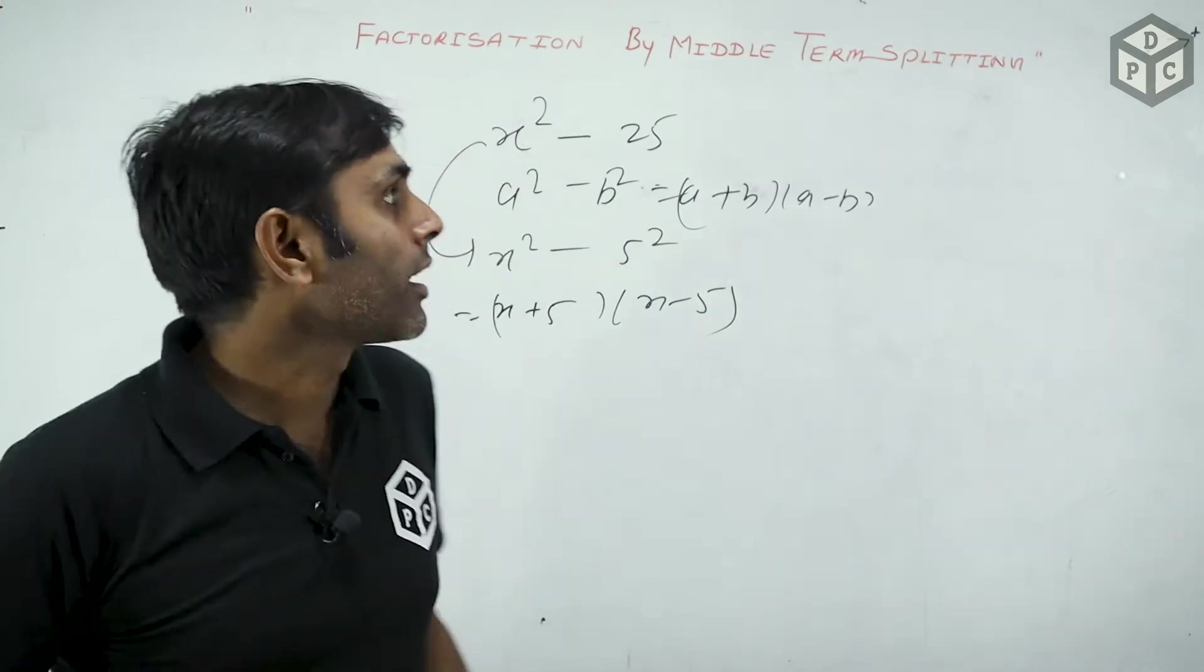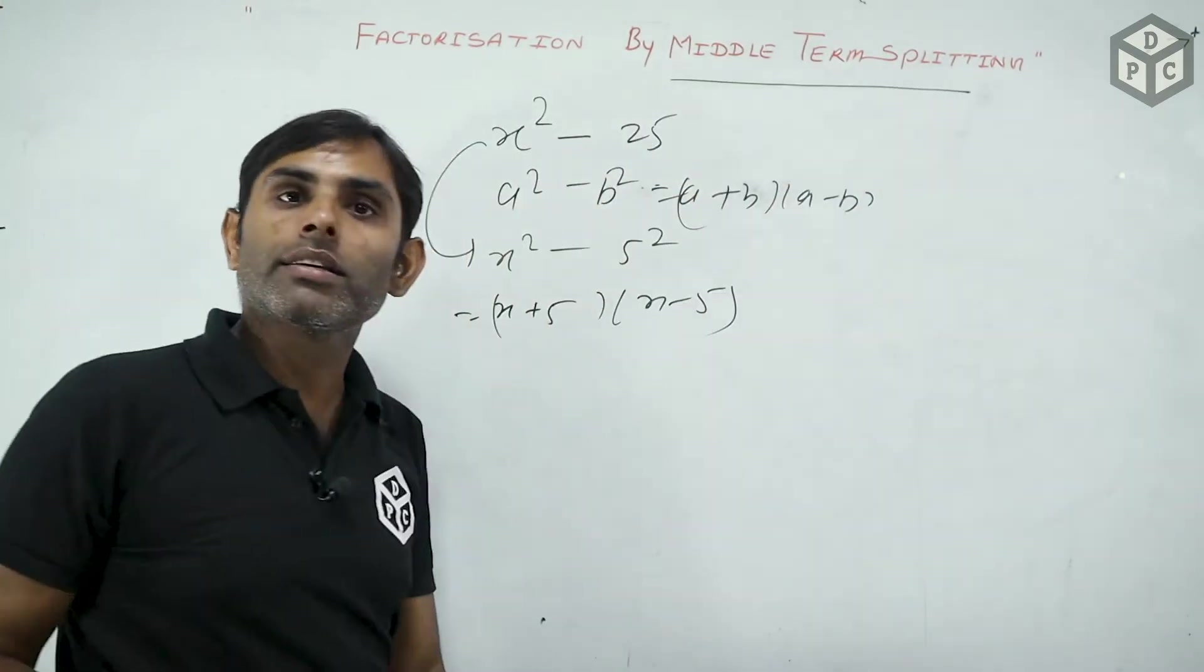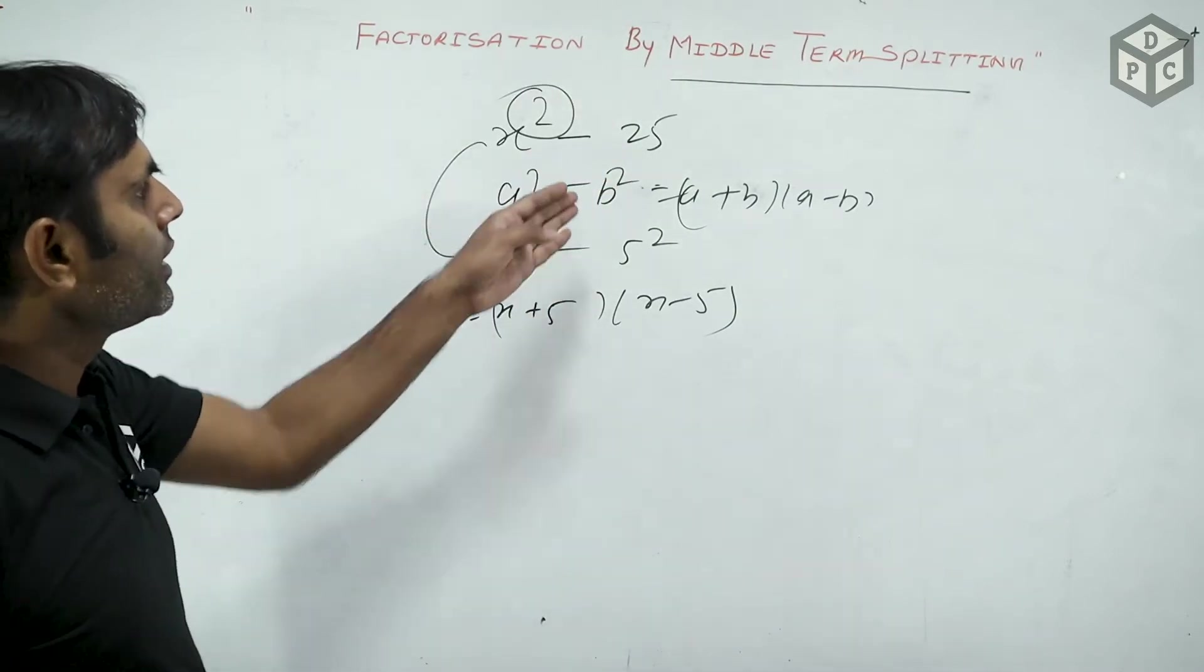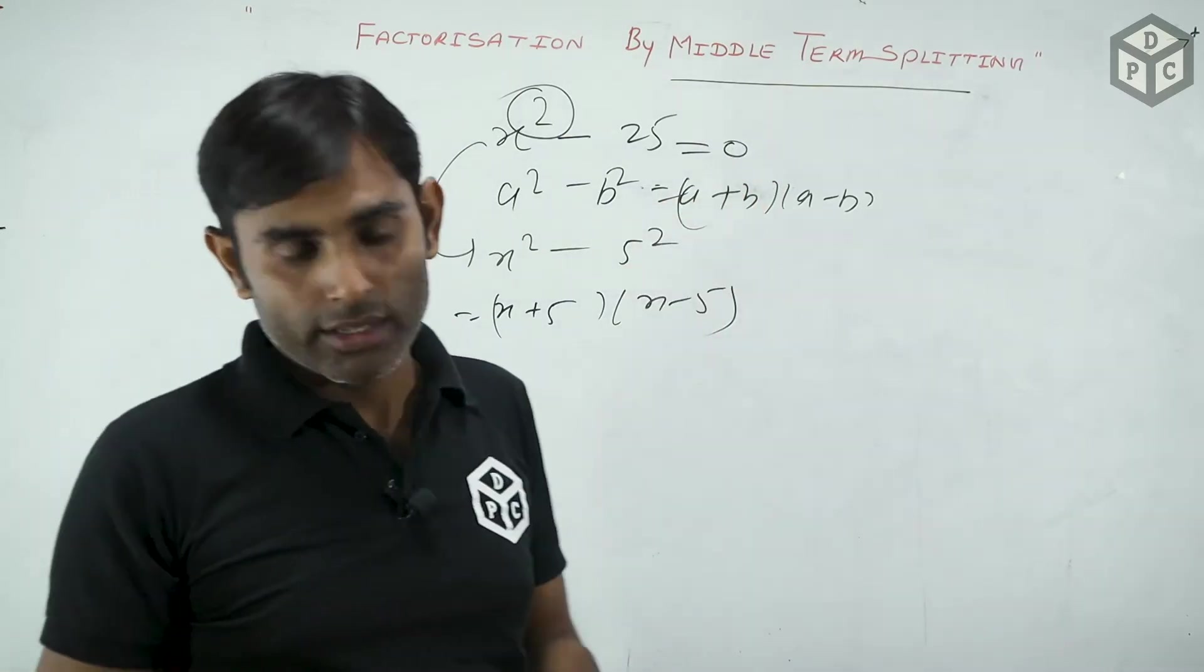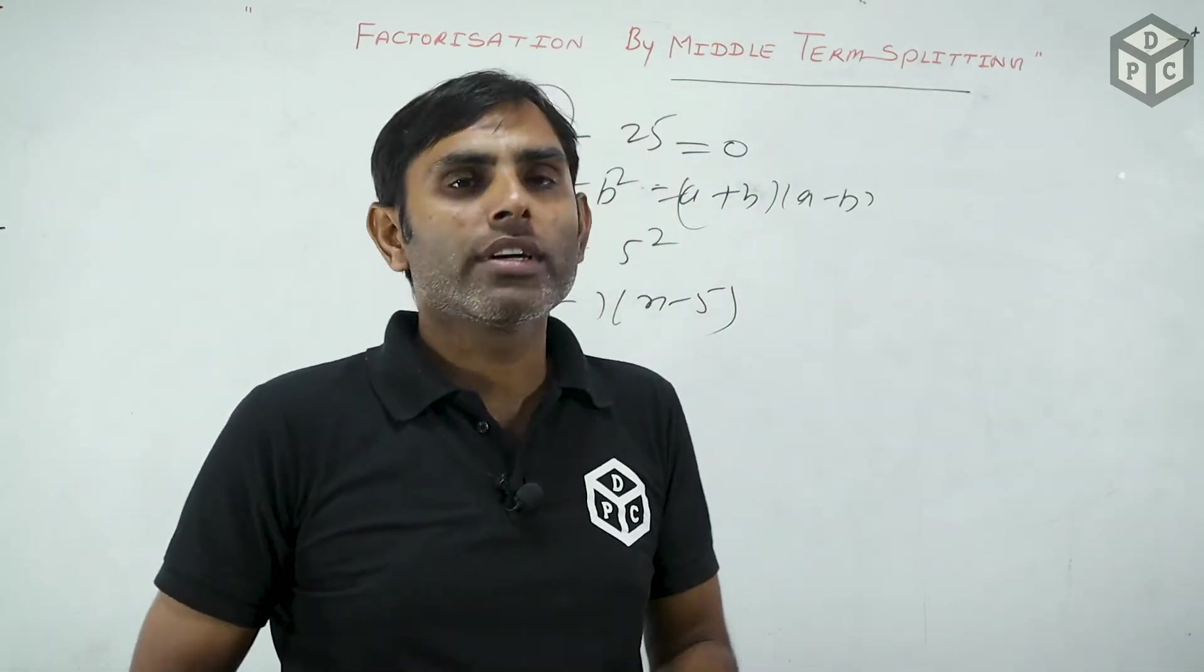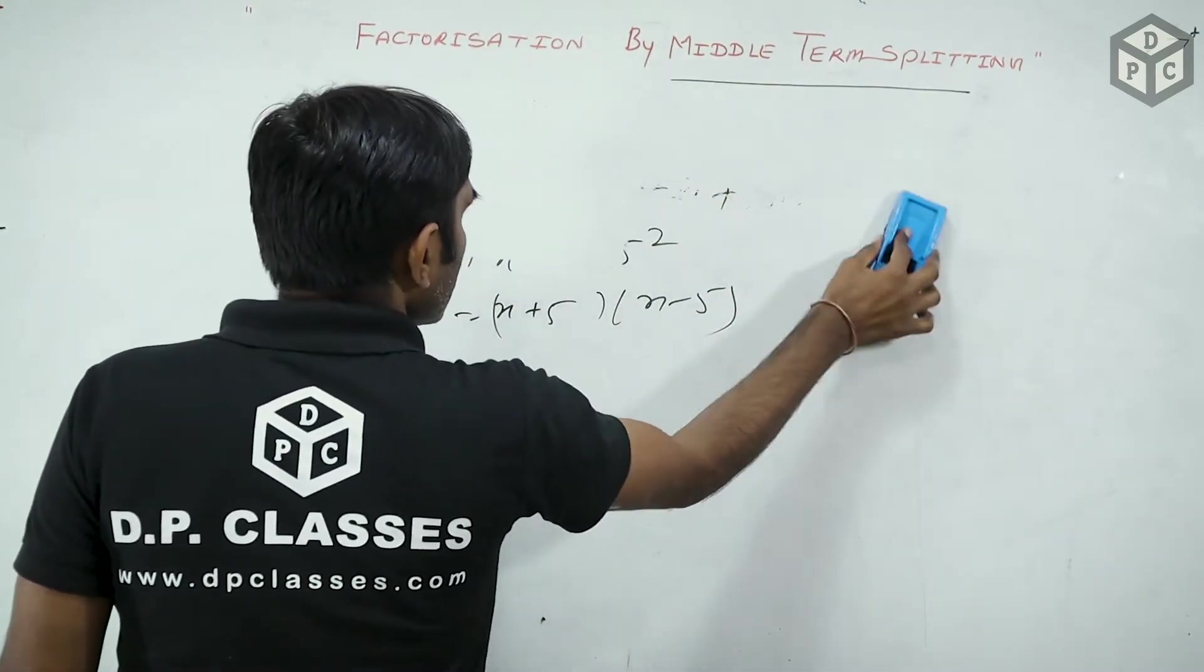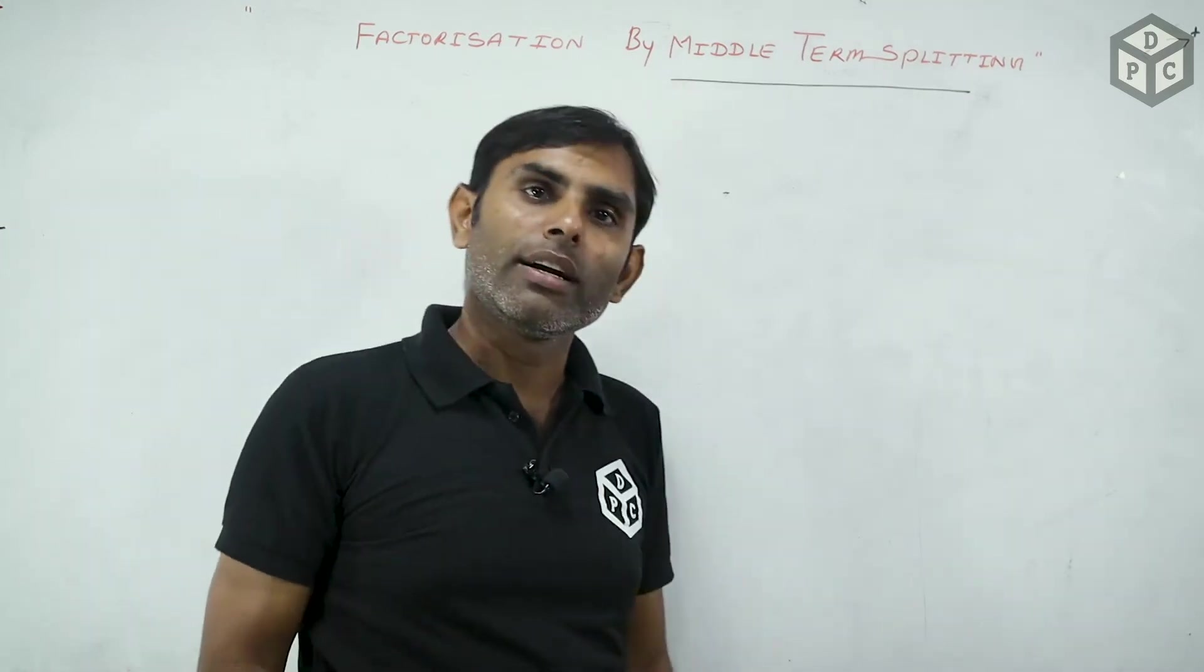Today we are going to discuss about a method of factorization by middle term splitting. Now we will apply this to the quadratic. So this is not equal to 0. If it is equal to 0, this is an equation. There is no big difference in polynomial equation. But what happens in the equation? LHS, RHS part is only single LHS part.